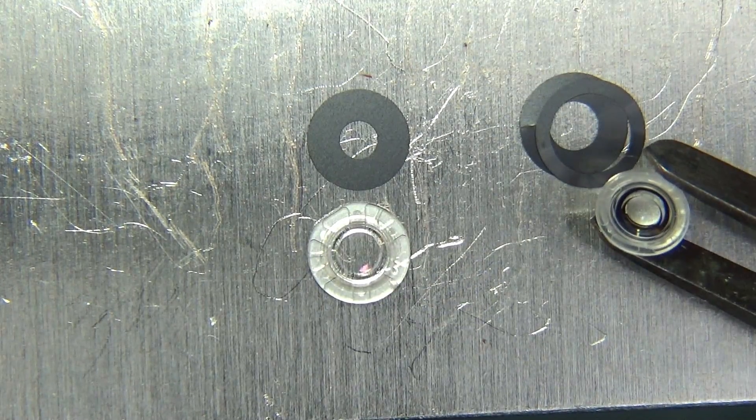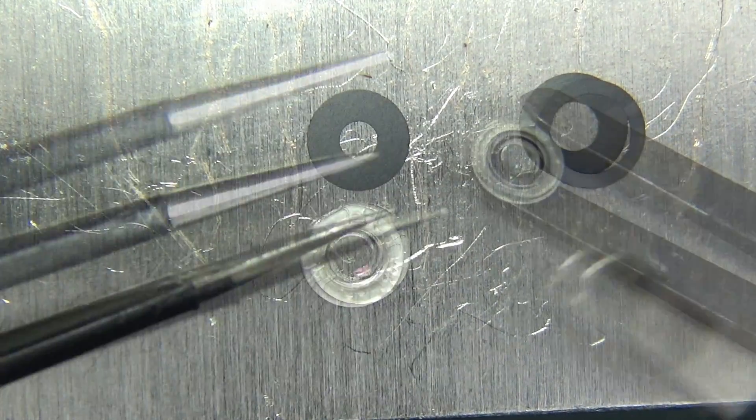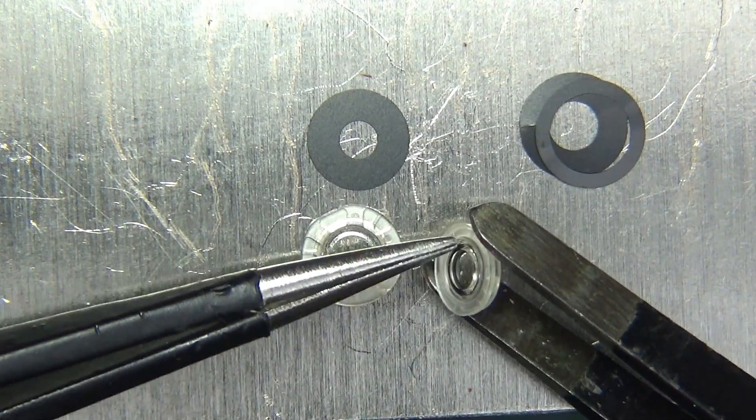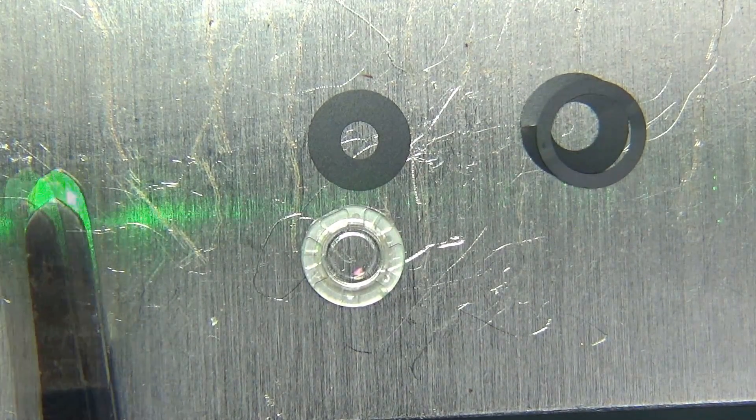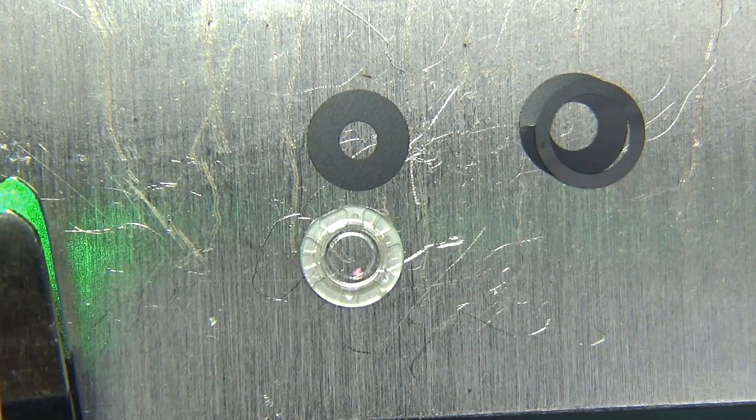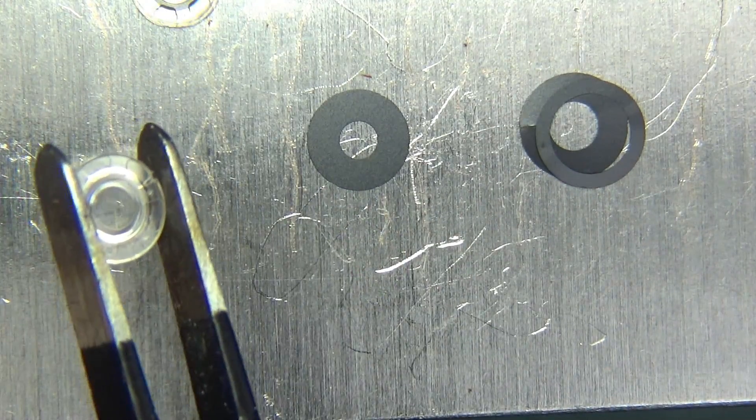This feels almost flat on one side and convex on the other. This one has got focal point, maybe about 10 millimeters away from it. And let's try this last one.